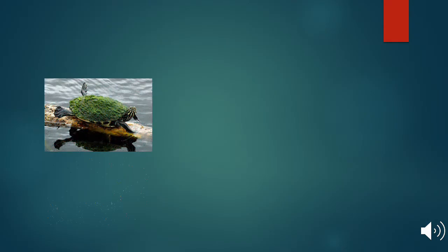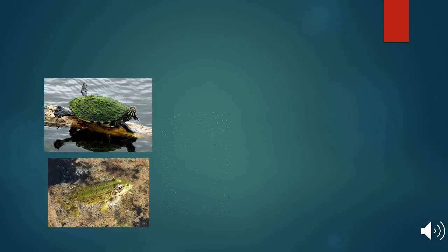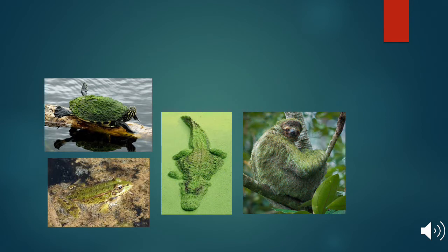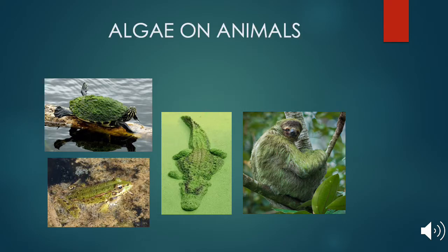As we discussed, algae are found on various surfaces like ponds, rocks, and tree barks. But can you notice something very unusual in these pictures? Algae are growing on the surface of animals as well — you can see algae growing on turtles, crocodiles, sloths, frogs, etc. So even on the moist skin of animals, algae can grow. Isn't that surprising?